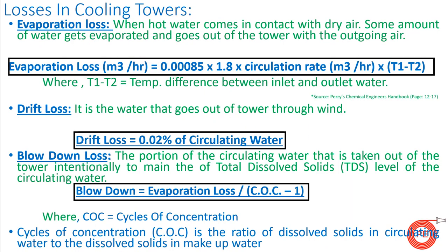Now let's look at the different losses in cooling towers. Water is precious and governments have strict norms on its usage. The first loss is evaporation loss — when hot water comes in contact with dry air, some water evaporates into the atmosphere. The empirical formula is: Evaporation Loss = 0.00085 × 1.8 × Circulation Rate × (T1 − T2), where T1 and T2 are the inlet and outlet water temperatures.